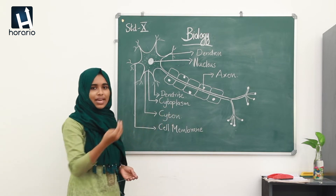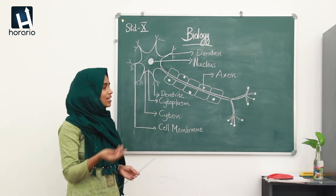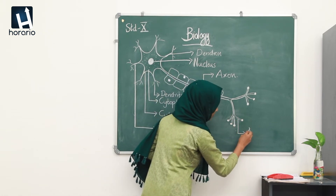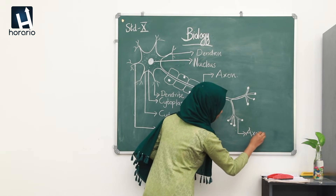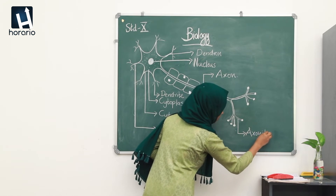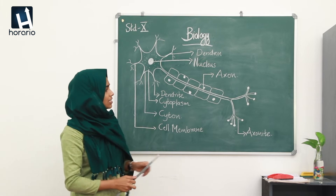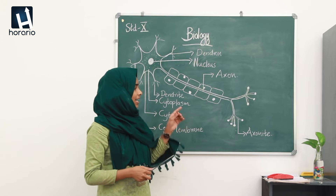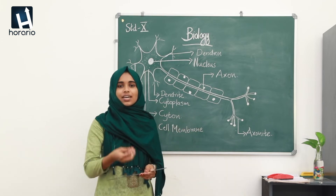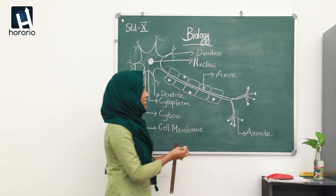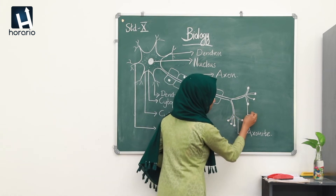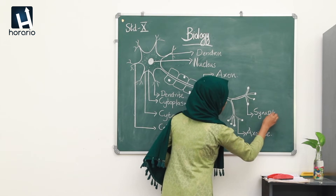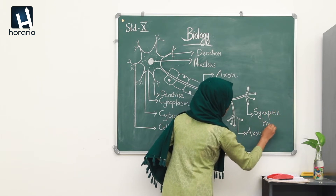Just as the dendron branches into dendrites, the axon branches into small branch-like structures called axonites. Now look at the tip of the axonite — there is a knob-like structure. The axonite ends at this knob-like structure, which is called the synaptic knob.